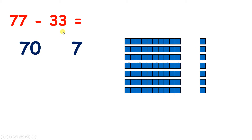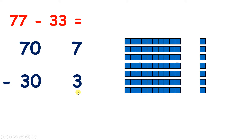And we can partition the number 33 into 30 and 3, because in the number 33 there are three tens and three units. So we're going to subtract 30 and 3 from 70 and 7.